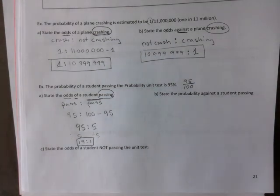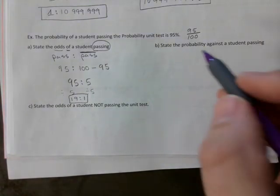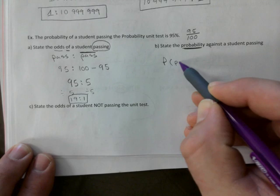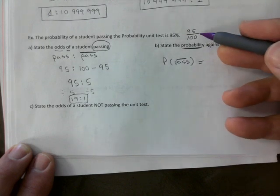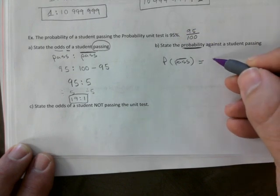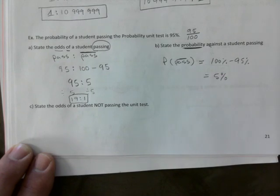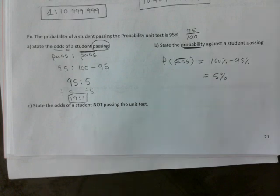The probability against a student passing — probability of not passing. You can take 100 percent minus 95 percent to get 5 percent. Some of you probably just knew it was 5 right away. Remember they add up to 100 percent — it happening plus it not happening.